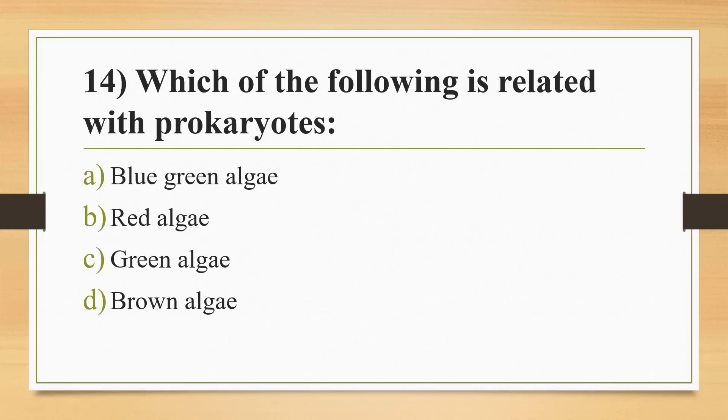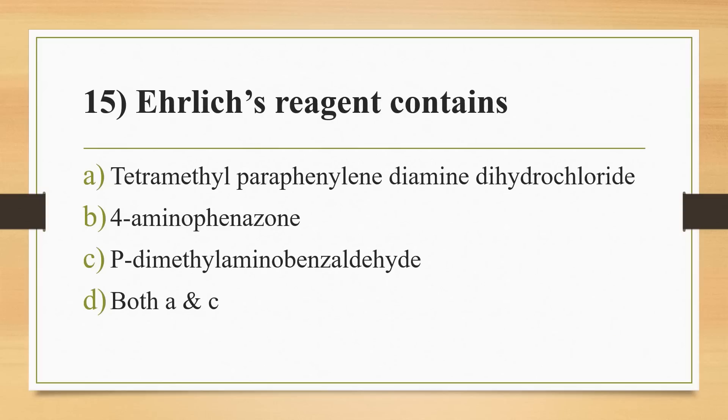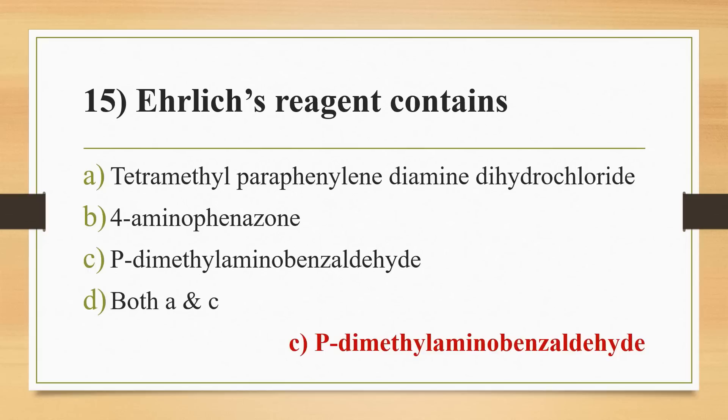Fourteenth question: which of the following is related with prokaryotes? Options: blue-green algae, red algae, green algae, or brown algae. Answer is Option A, blue-green algae. Fifteenth question: Ehrlich's reagent contains? Options: trimethyl paraphenylenediamine dihydrochloride, para-aminophenazone, para-dimethyl aminobenzaldehyde, or both A and C. Answer is Option C, para-dimethyl aminobenzaldehyde.